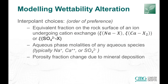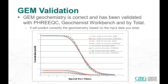In GEM, we model wettability alteration using relative permeability interpolation. The choices for the interpolant in order of preference are: first, the ion exchange or equivalent fraction on the rock surface of an ion undergoing cation exchange; second, the phase molality of any aqueous species, typically sodium, calcium, or sulfate; and third, the porosity fraction change due to mineral deposition or dissolution. GEM has been validated against FreeQC, Geochemist Workbench, and by Total using their internal software, and in one particular case GEM gave a better match than FreeQC.